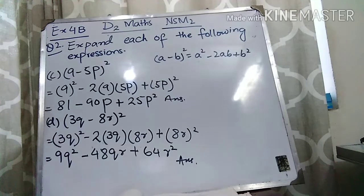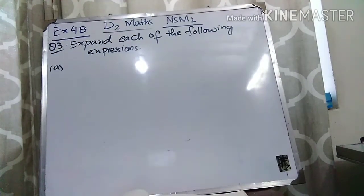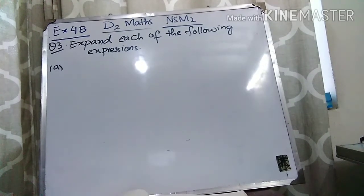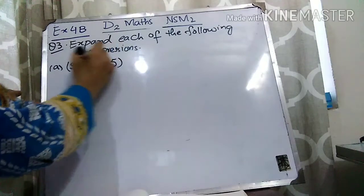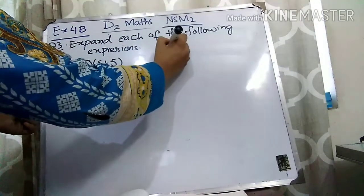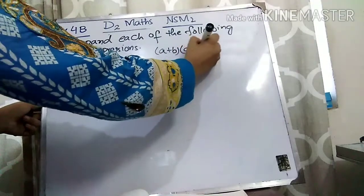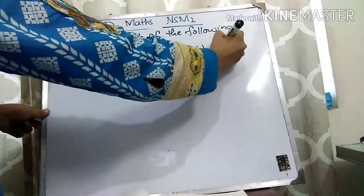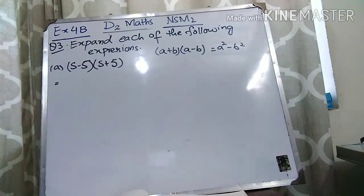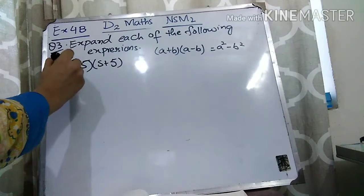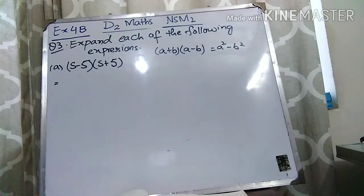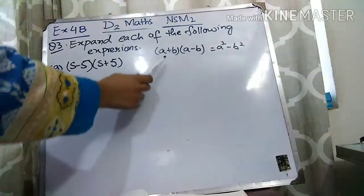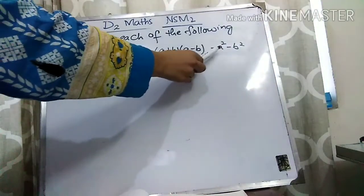Now let's move to question number 3: Expand each of the following expressions. In these questions, you will use the formula (A plus B)(A minus B) equals A square minus B square. Remember that whenever you have the same values but with a plus sign in one bracket and a minus sign in the other bracket, you use this formula. The position can be changed — it can be (A plus B)(A minus B) or (A minus B)(A plus B) — it doesn't matter; you use the same formula.